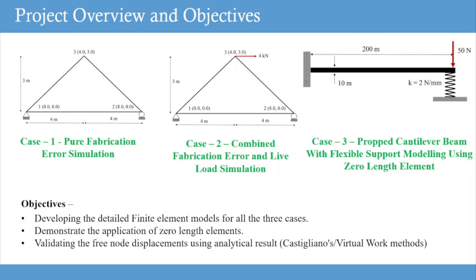Fabrication error generally means that while manufacturing the truss members, some members may have shorter or longer lengths. These fabrication errors will introduce some additional stresses and displacements, in addition to the stresses and displacements due to applied loads.